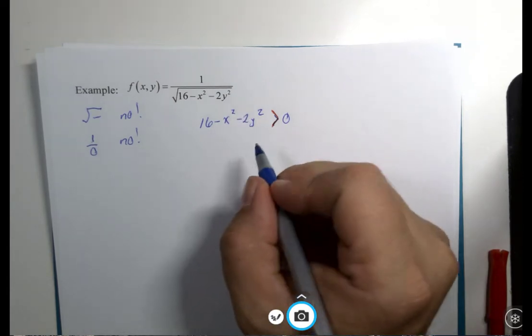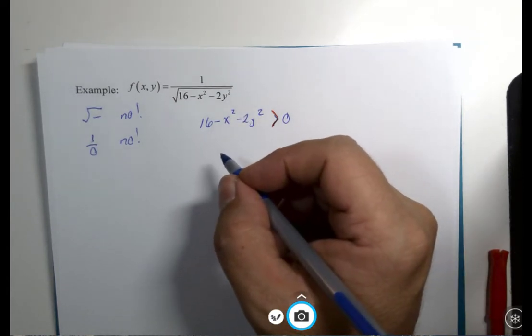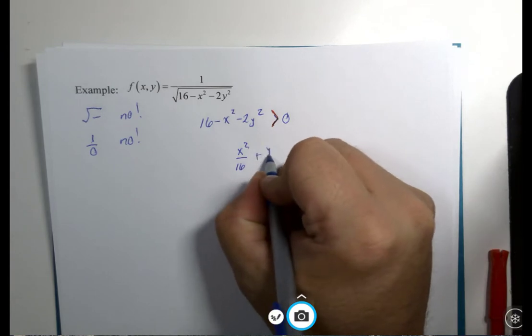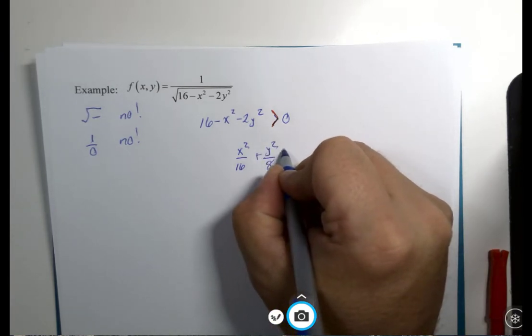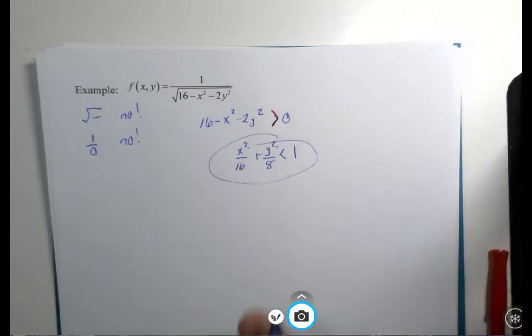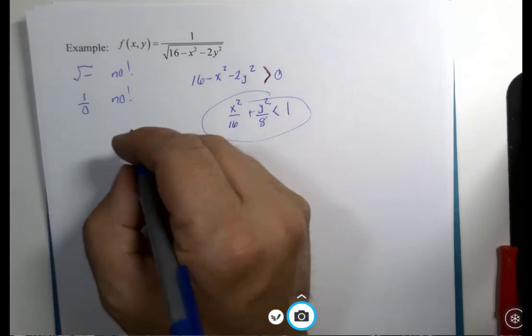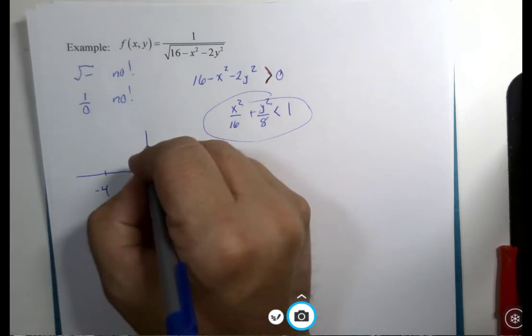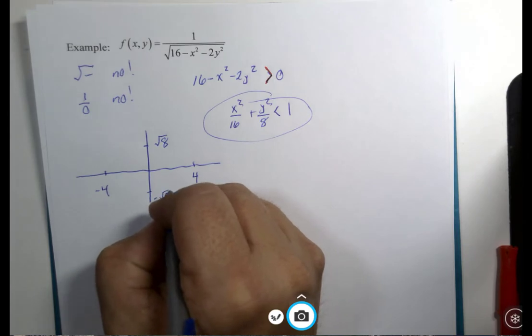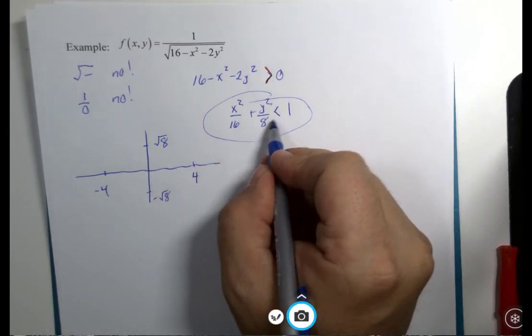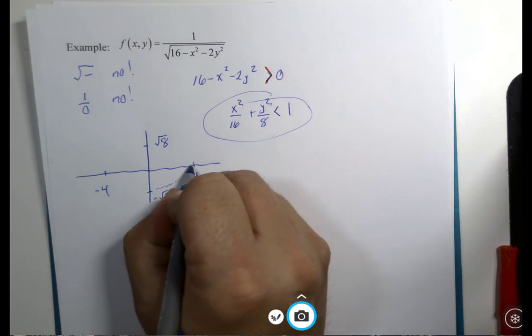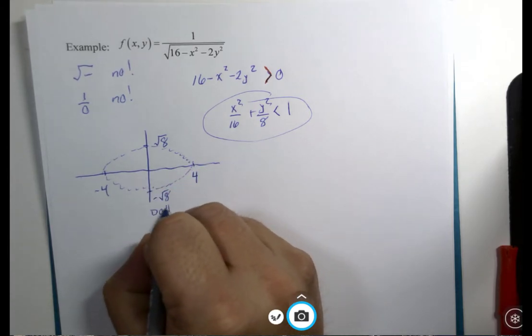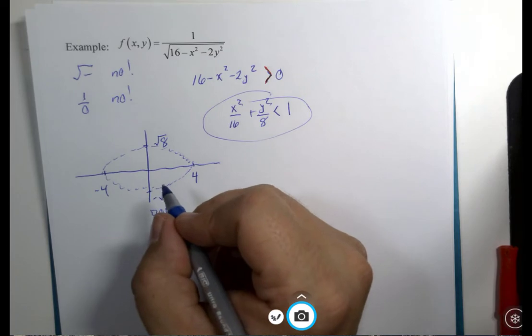When I solve this inequality similar to what I just did, you would get x²/16 + y²/8 < 1. And when we were to try to graph this ellipse, 4 and -4, square root of 8 and negative square root of 8, if there's no equal sign, this ellipse is going to be made up of dotted segments.